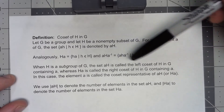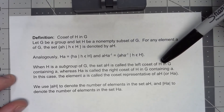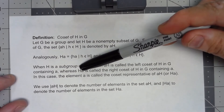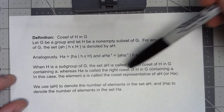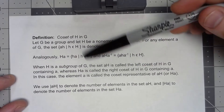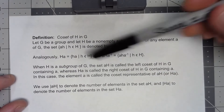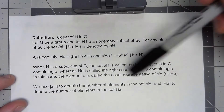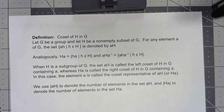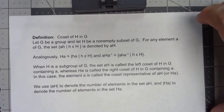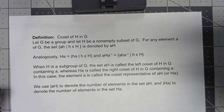If we're multiplying on the left we'll call them left cosets; if we're multiplying on the right we're going to call them right cosets. We can then talk about the number of elements in those cosets and things like that. That's a lot to digest, so let's take a look at an example.